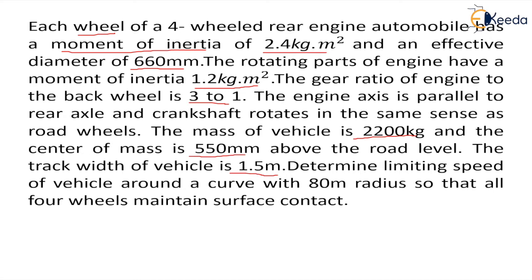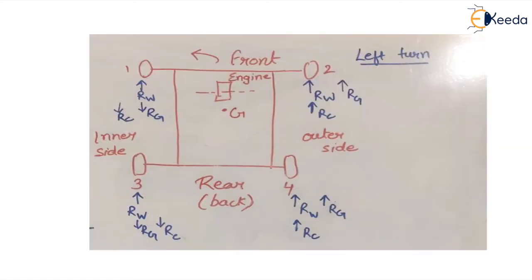We have to determine the limiting speed of the vehicle around a curve with radius of curvature capital R = 80 meter, to ensure that all four wheels maintain surface contact. Since the question does not specify left or right turn, let's assume we are taking a left turn.